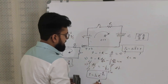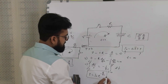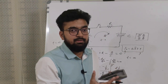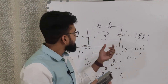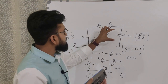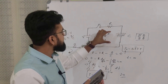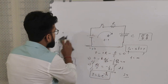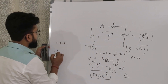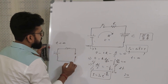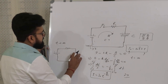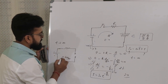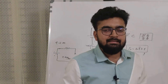Now, what happens at t equals infinity? If we put t equals infinity into the current equation, we get I equals 0. This means there is no current in the circuit, implying the capacitor is fully charged. The electrons have stopped accumulating, so the new equivalent circuit at t approaches infinity is an open circuit in series with R — the capacitor now behaves as a voltage source equal to the supply voltage, meaning it is fully charged.